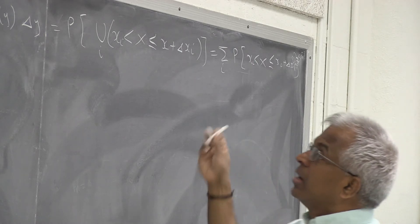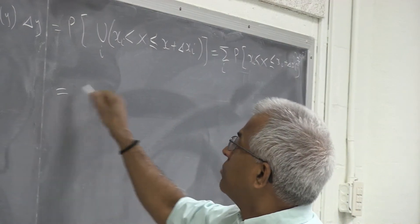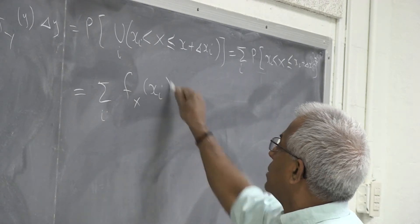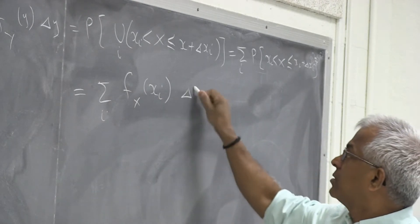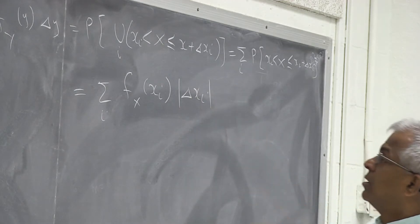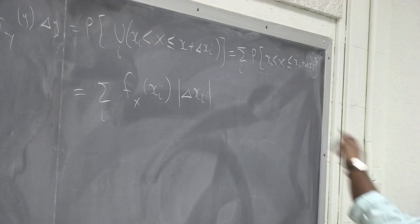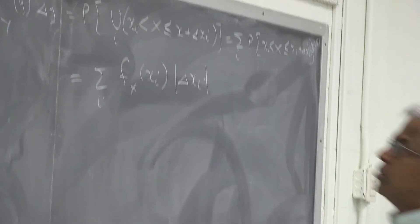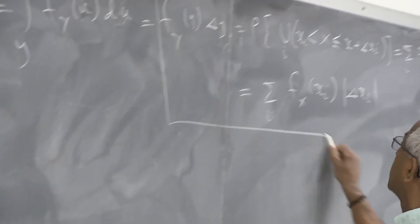But on the other hand, using the same approximation, we can write this as f_x(xi) multiplied by delta xi. But this delta xi, depending on whether it is positive or negative, the integration limits will be either from xi to xi plus delta xi or the other way. But by approximation, so comes up. So we can concentrate on this piece.